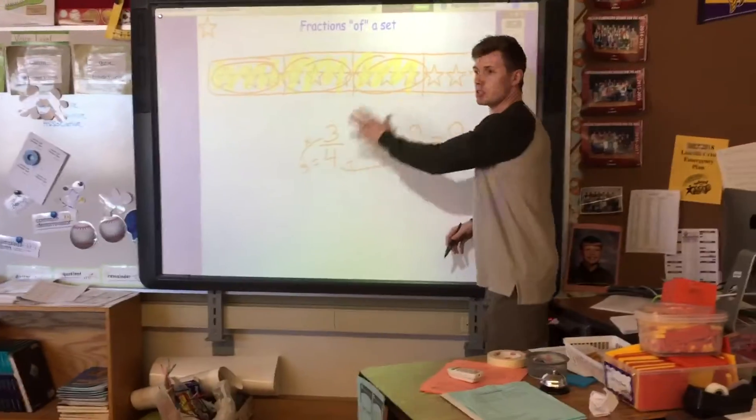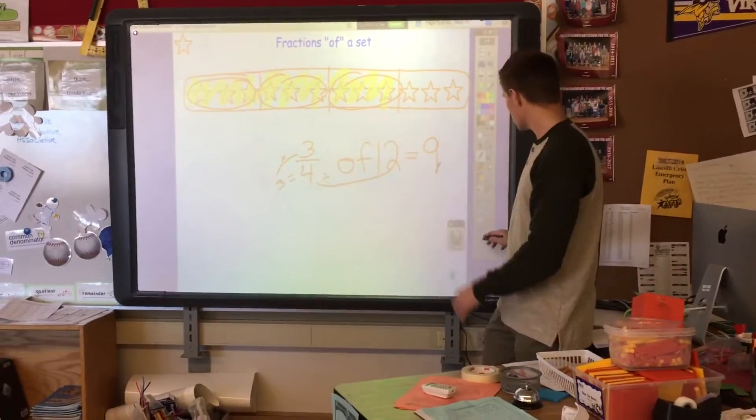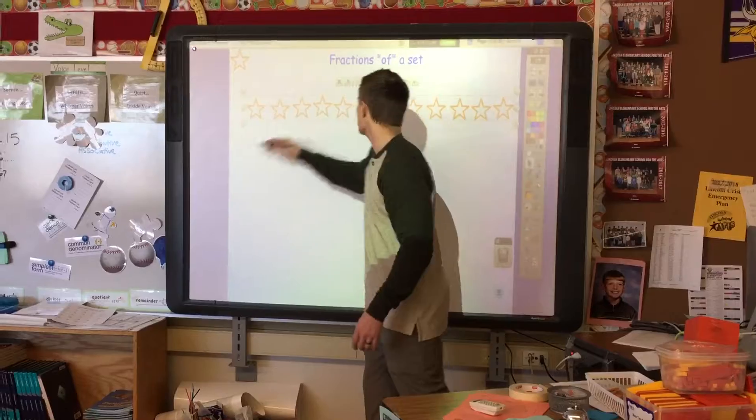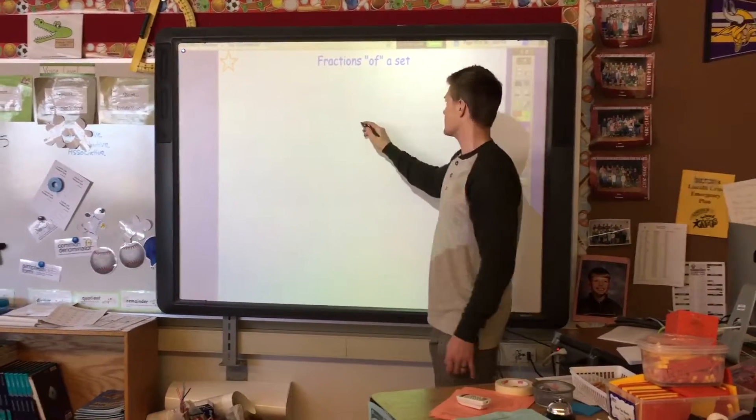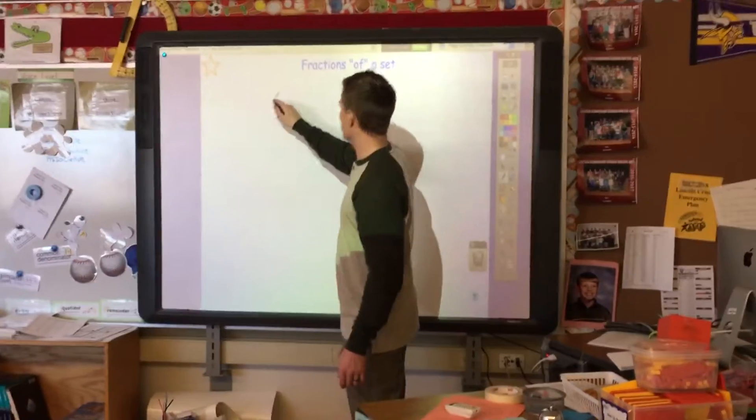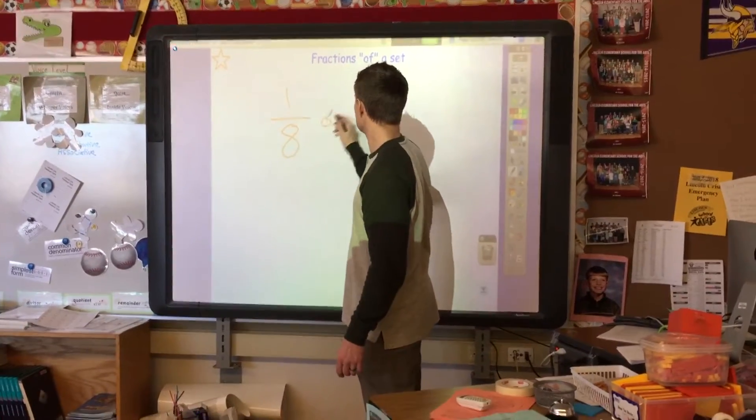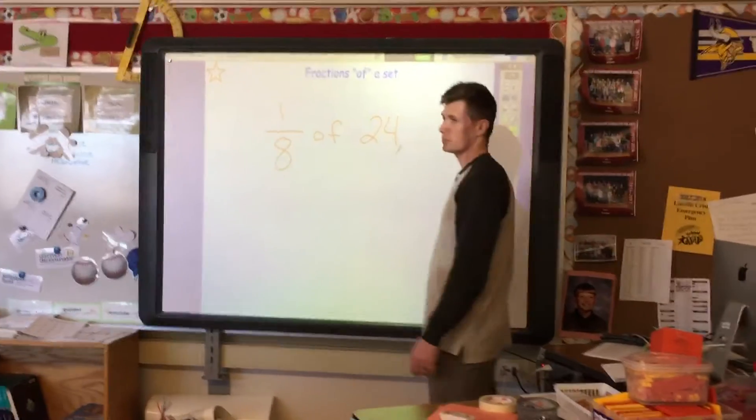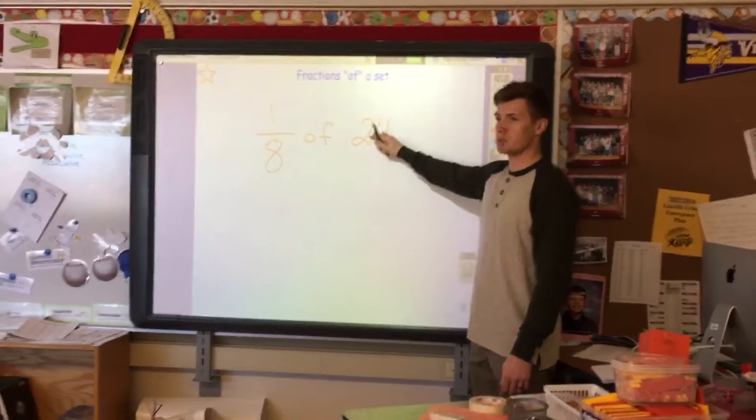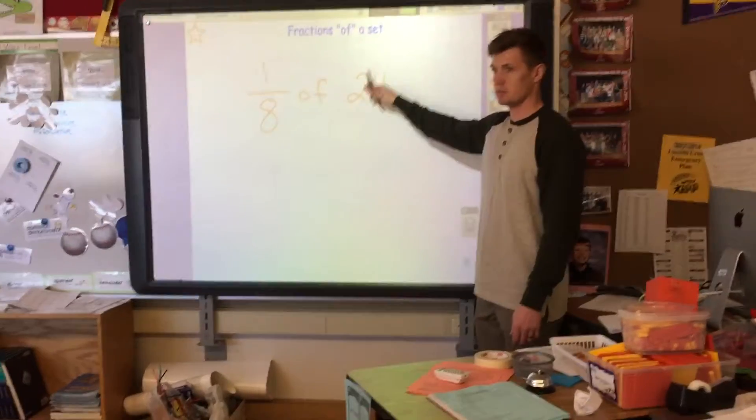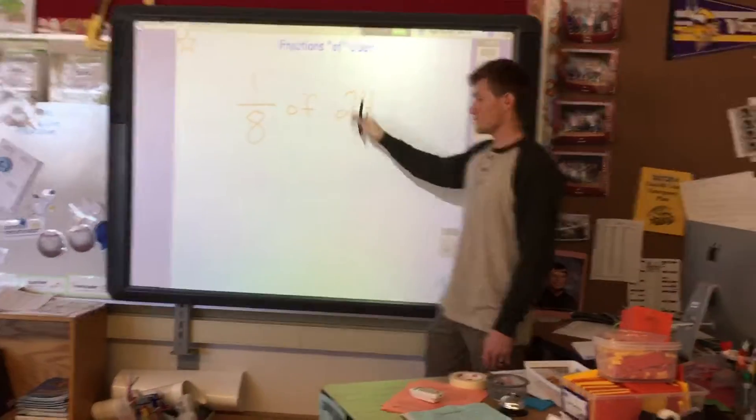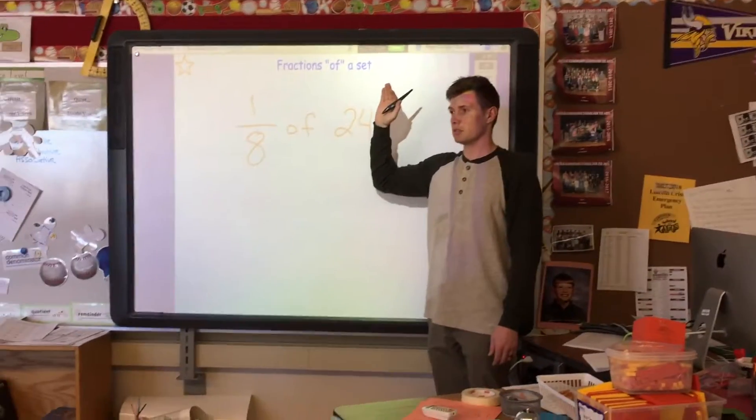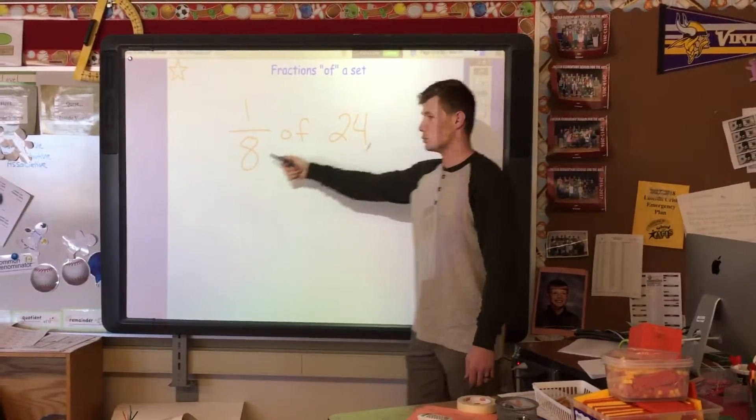So thinking about it this way is one strategy. Another strategy is if I was going to just think of a fraction of a set, and I'm going to say my set, I want to know what one-eighth of twenty-four would be. Well, twenty-four is split into how many parts based on this equation? Twenty-four is going to be split into? Queen? Eight. Eight equal groups.